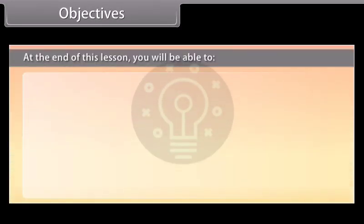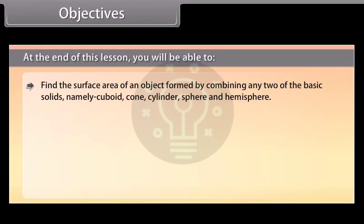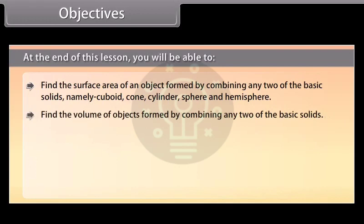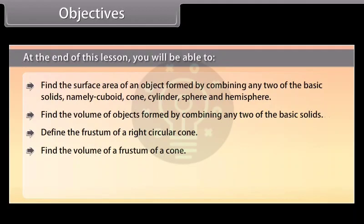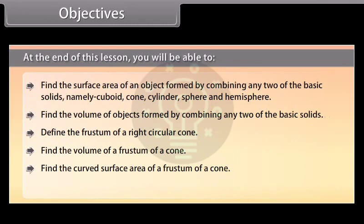At the end of this lesson, you'll be able to find the surface area of an object formed by combining any two of the basic solids — namely cuboid, cone, cylinder, sphere, and hemisphere. Find the volume of objects formed by combining any two of the basic solids. Define the frustum of a right circular cone. Find the volume, curved surface area, and total surface area of a frustum of a cone.